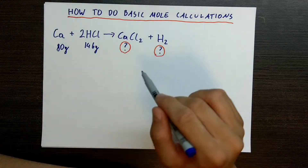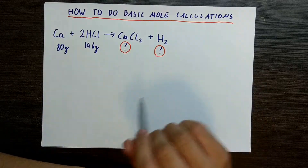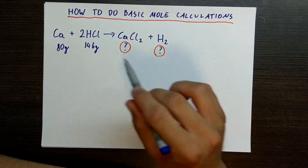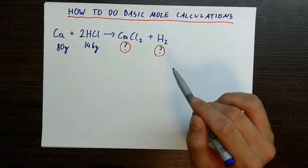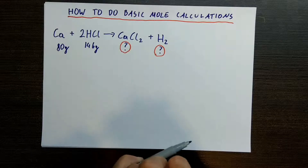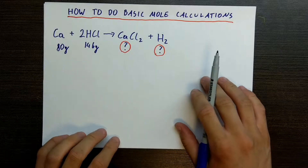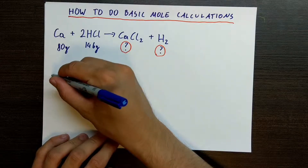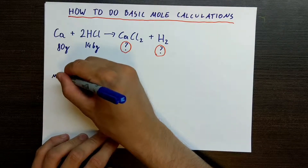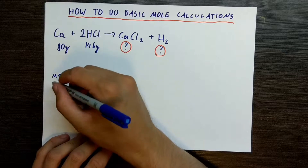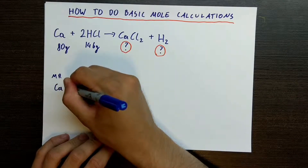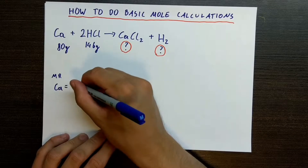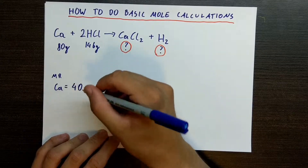First thing I like to do in such questions — and that's most questions to do with moles — is to figure out the molecular weight of everything here. So let's write down our MR values. Calcium, if you look on a periodic table, it will be 40 grams per mole. So that one is fairly straightforward — we just look at the periodic table.